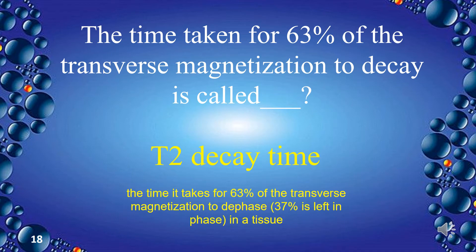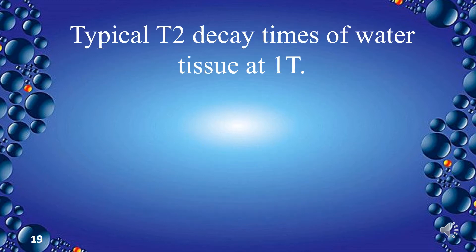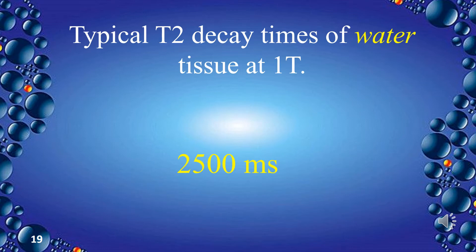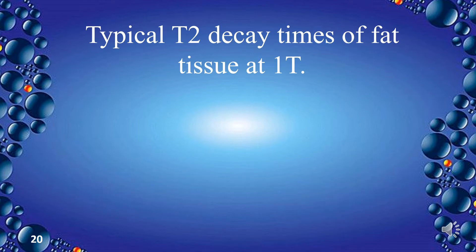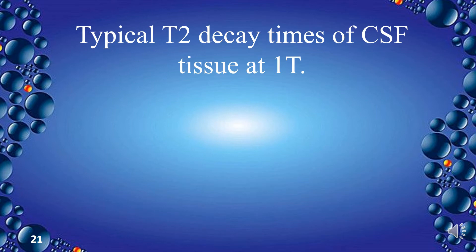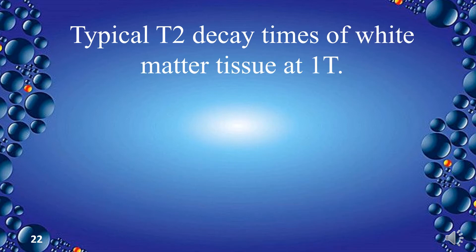T2 decay time is the time it takes for 63% of the transverse magnetization to dephase in a tissue. Typical T2 decay times at 1T: water is 2,500 milliseconds, fat is 100 milliseconds, CSF is 300 milliseconds, and white matter is also 300 milliseconds.